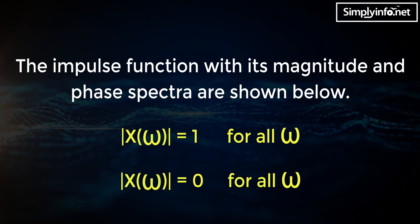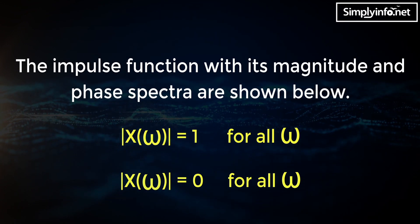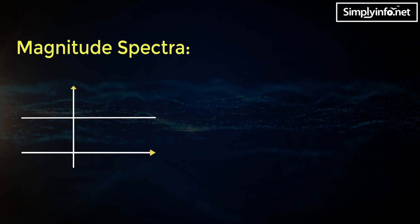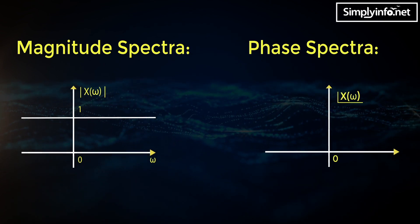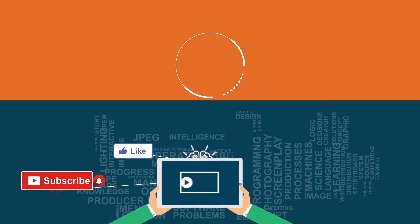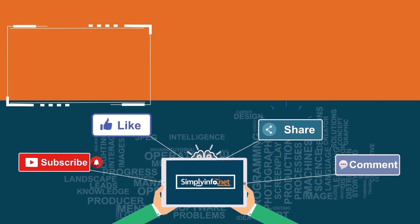The phase spectra of X of omega equals 0 for all omega.